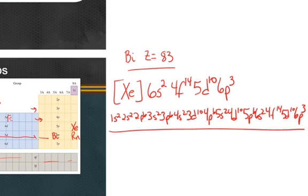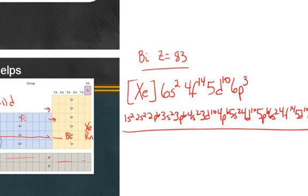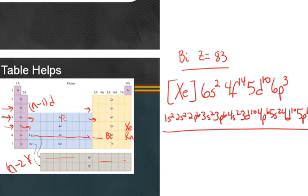That is the electron configuration for bismuth. And without the periodic table, I would not have been able to memorize the Aufbau or the filling order for bismuth. So the periodic table here really, really helps.